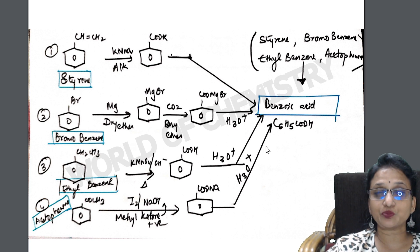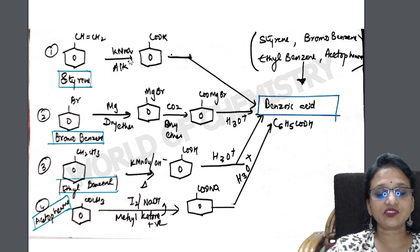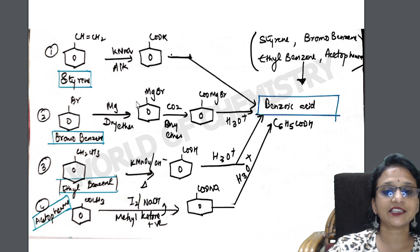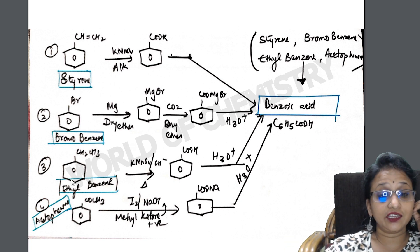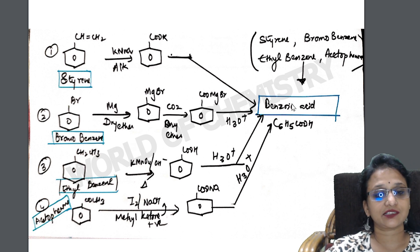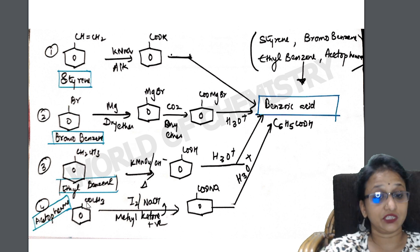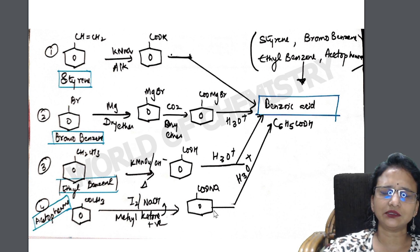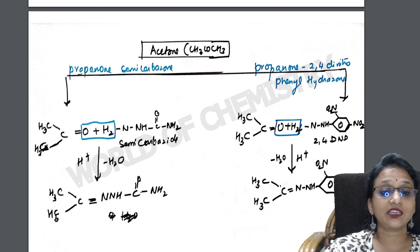Conversions to prepare benzoic acid from various starting materials: styrene on oxidation with KMnO₄ gives COOH (carboxylate), which on hydrolysis gives benzoic acid. Bromobenzene: add MgBr to elongate the chain, then do hydrolysis. Ethyl benzene: use an oxidizing agent to convert to benzoic acid via hydrolysis. Acetophenone: it is a methyl ketone, so it gives a positive iodoform test — use this reaction to convert to sodium benzoate, which on hydrolysis gives benzoic acid.